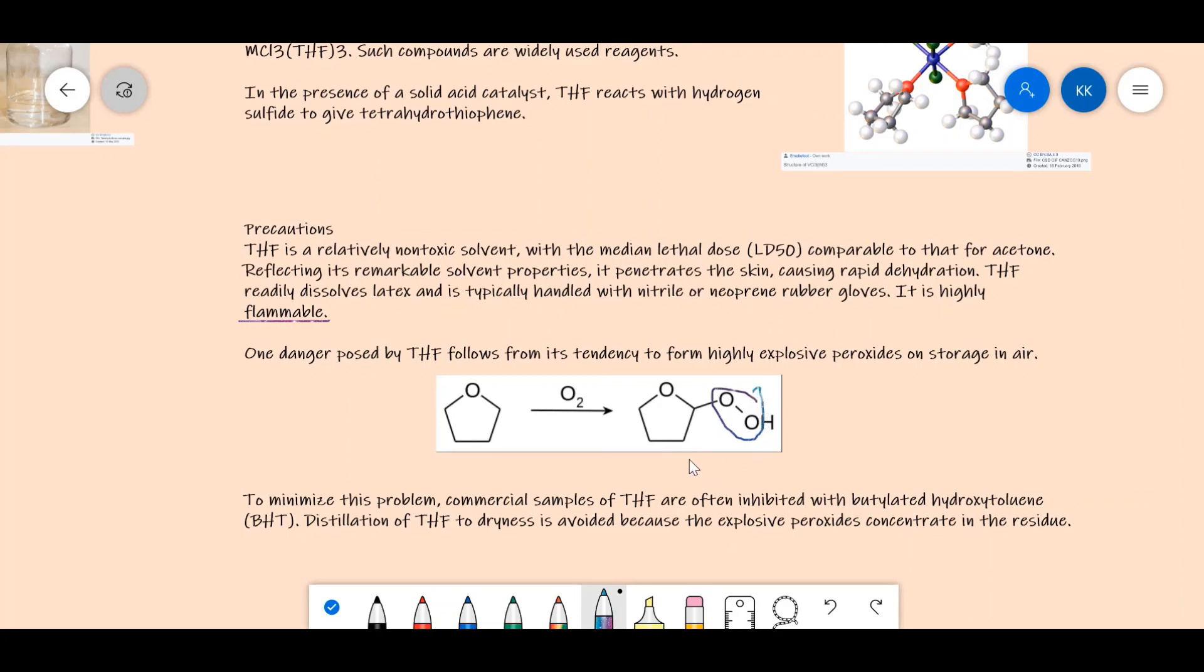To minimize this problem, commercial samples of THF are often inhibited with butylated hydroxytoluene, which is abbreviated as BHT. Distillation of THF to dryness is avoided because the explosive peroxides concentrate in the residue. So if we had distilled the THF to dryness, we would have gotten explosive peroxide in the residue, which could have been very harmful to us or our surroundings.